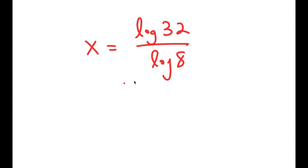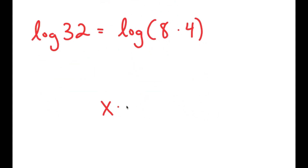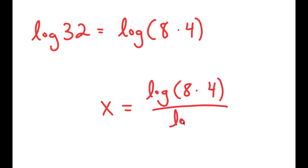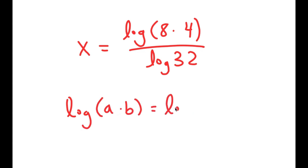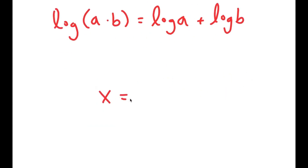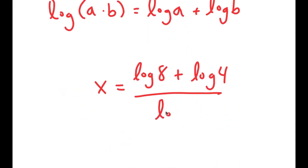Now, log of 32 is the same thing as log of 8 times 4. So I get log of 8 times 4 over log of 8. And if I have something in the form log of a times b, this is equal to log a plus log b. So in this case, the numerator becomes log of 8 plus log of 4, over log of 8.